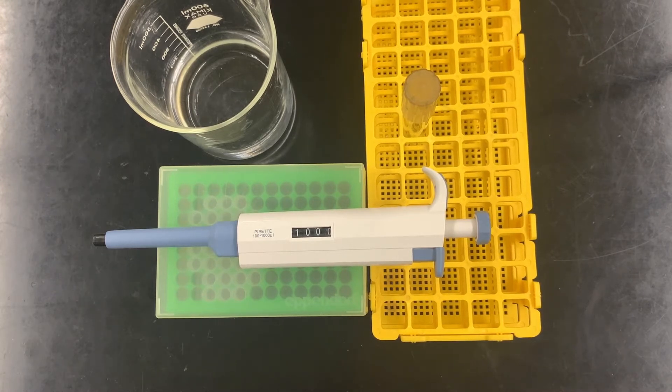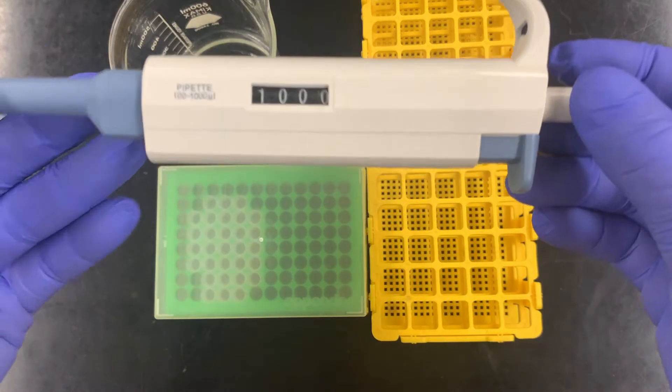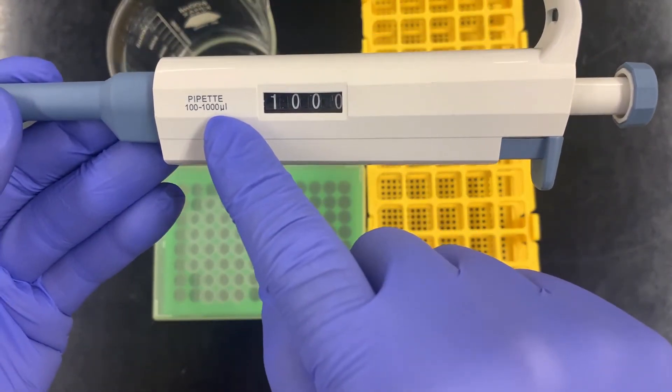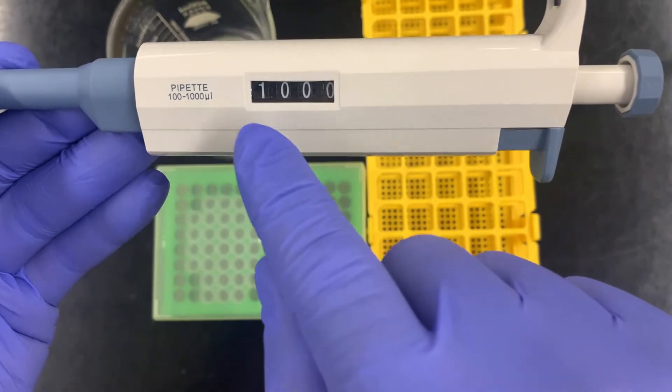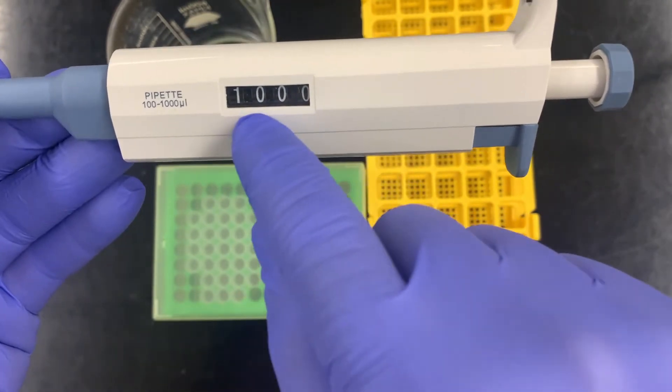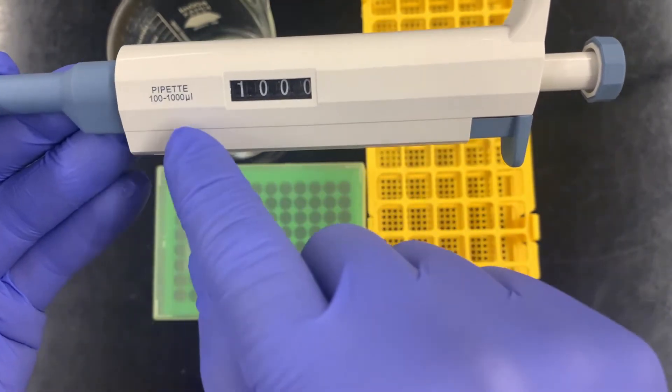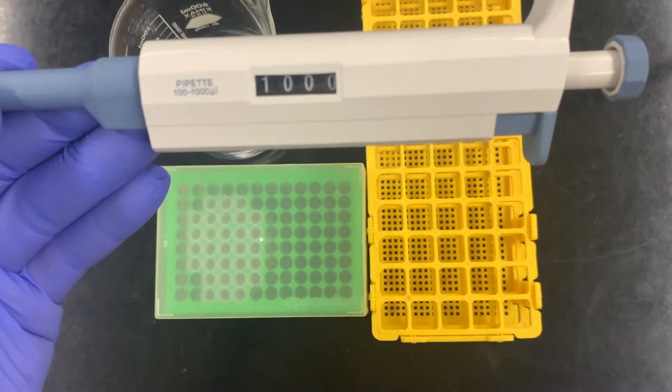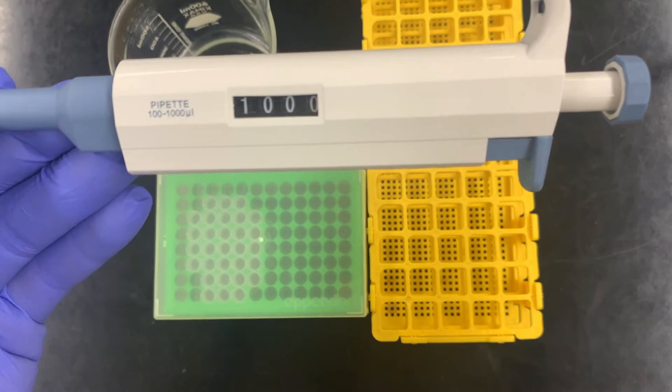Using a micropipette, sometimes just called a pipetter or a pipette, is relatively straightforward. The hardest part is understanding the units that you're seeing. Notice here that the units are written in microliters. Without getting into the details of the conversion, we can simply understand that 1,000 microliters is 1 milliliter, and 100 microliters is 0.1 milliliter. Those are the two most relevant volumes for us.